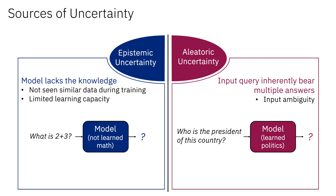For large language models, decomposing the total uncertainty into epistemic and aleatoric uncertainties is very helpful because it not only tells us whether the LLM is uncertain, but also why the LLM is uncertain. However, there have not been any works that perform uncertainty decomposition for large language models. In this work, we aim to fill this gap.